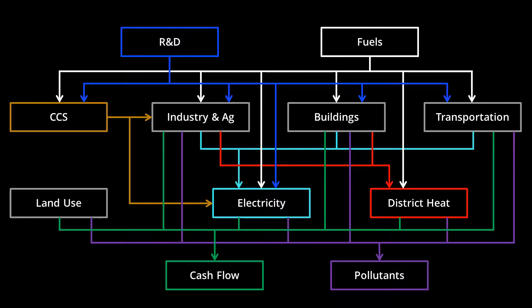Changes in cash flows are another important output from the EPS — either costs or savings caused by policy, relative to the business-as-usual case. The model tracks cash flow impacts on a number of different actors: government, industry, consumers, and certain specially broken-out industries, such as the coal industry or the natural gas and petroleum industry. The EPS offers many other outputs, such as the number of electric vehicles on the roads, an estimate of human lives saved due to reductions in particulate matter emissions, and more. In fact, any value calculated by the model can be used as an output if desired.